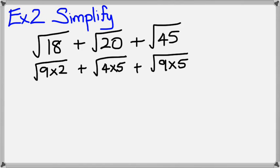Now I could take square root of those first numbers. Square root of 9 would give me 3, and I've got square root of 2. Square root of 4 is going to give me 2, which means square root of 5 is left over. And finally, square root of 9 is 3, and I've got square root of 5 left over.